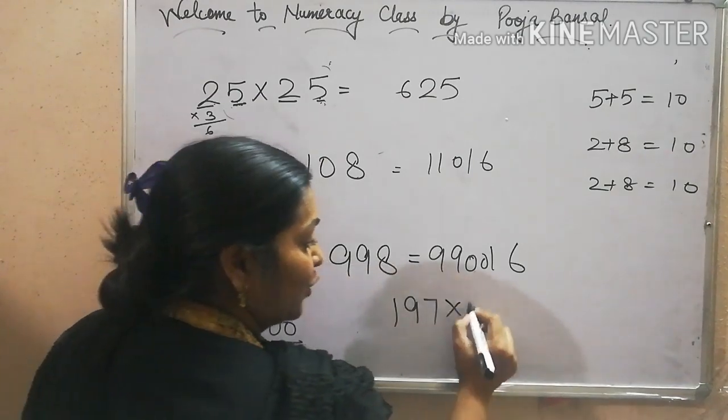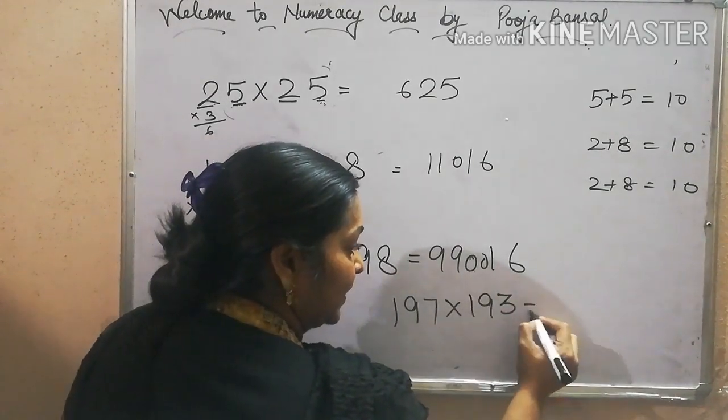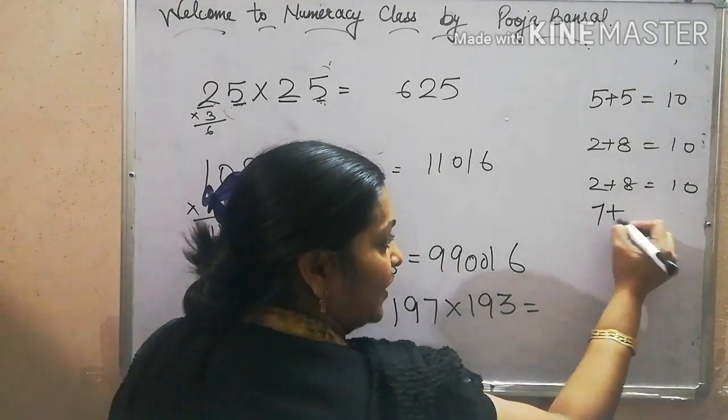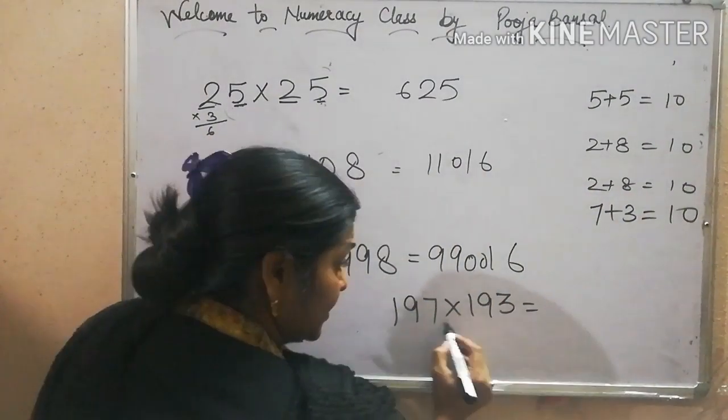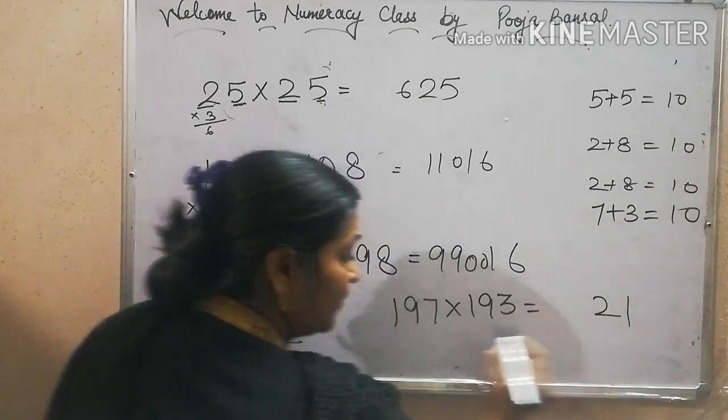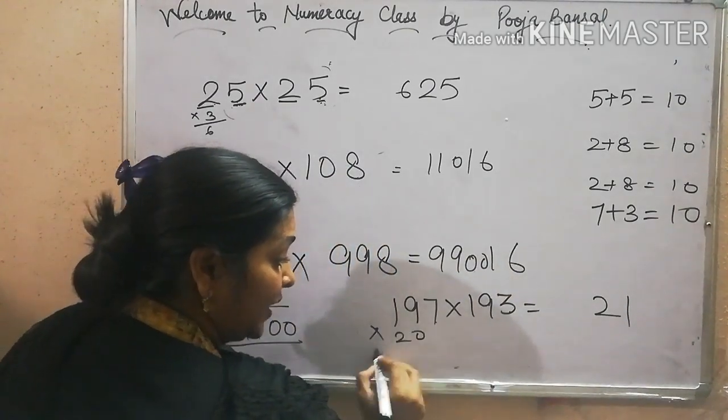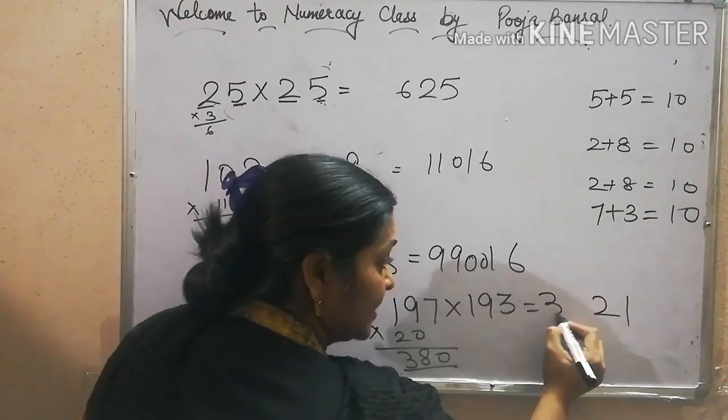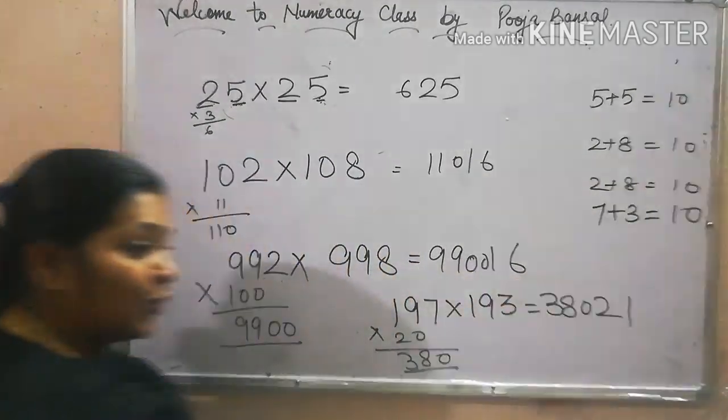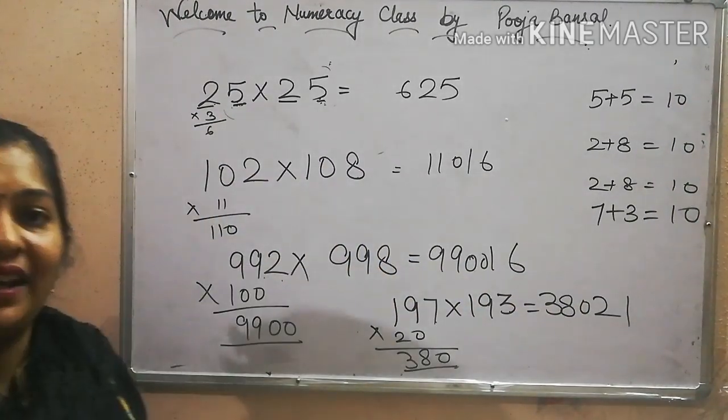197 into 193. Again, 7 plus 3 is equal to 10. So 7 threes are 21, and 19 into 20, we get 380. So the answer is 38021. So easy it is.